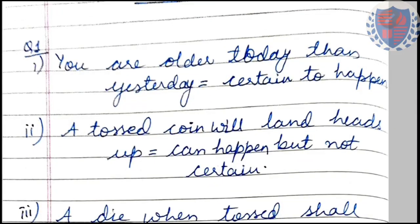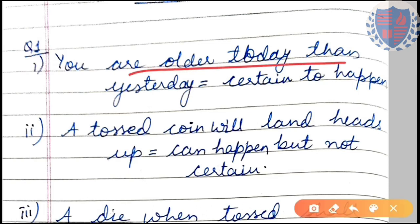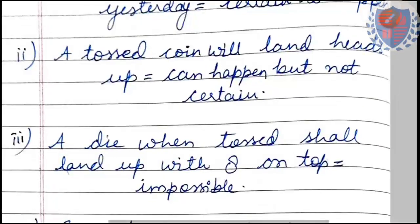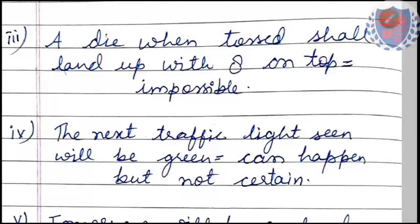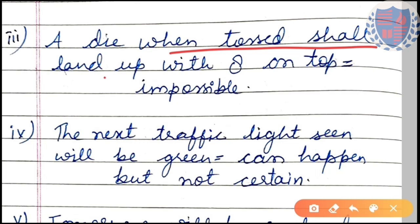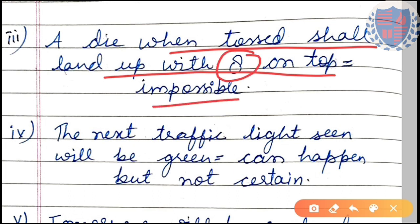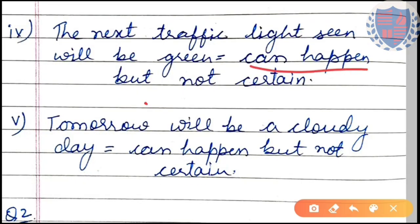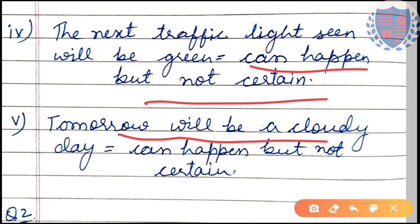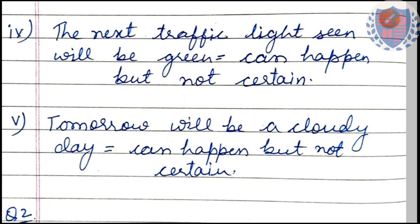Exercise: identify the type of each event. Statement 1 — 'You are older today than yesterday': certain event. Statement 2 — 'A tossed coin will land heads up': can happen but not certain. Statement 3 — 'A die tossed shall land with 8 on top': impossible event, since a die has only 6 faces. Statement 4 — 'The next traffic light will be green': can happen but not certain. Statement 5 — 'Tomorrow will be a cloudy day': can happen but not certain.